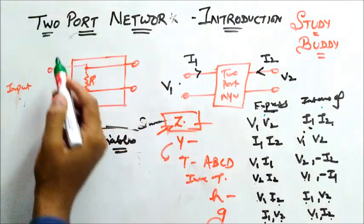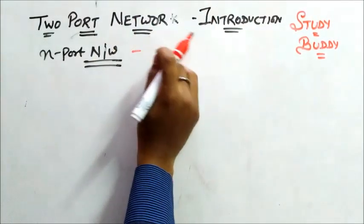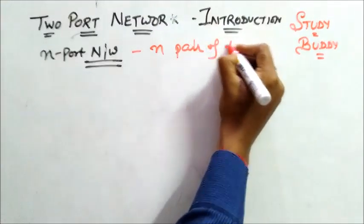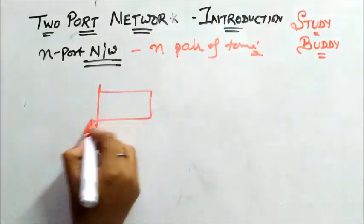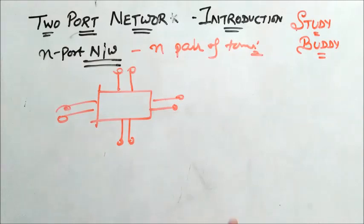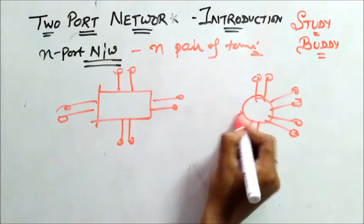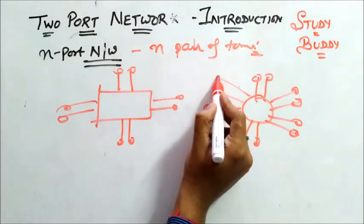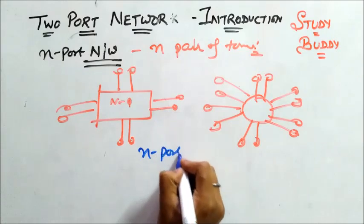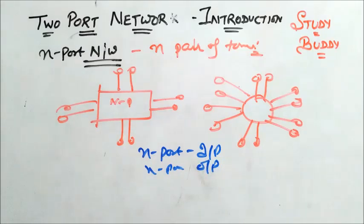Now I will take one more concept: the N port network. What is an N port network? The concept remains the same. An N port network is one which has N pairs of terminals. N ports will be on the input side and N ports on the output side. These are called N port networks.